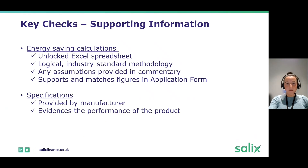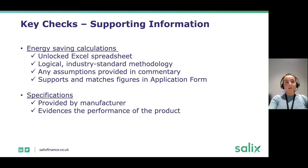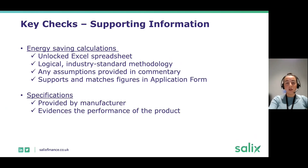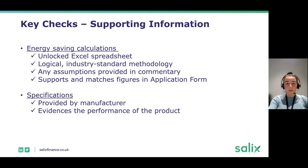Regarding energy saving calculations, ideally these are in an unlocked Excel spreadsheet so we can track the methodology and assumptions used. We expect logical industry-standard methodology with assumptions provided in commentary, and the calculations should support the figures used in the application form as an evidential basis. Specifications should be provided by the manufacturer and evidence the product's performance — for example, if you're providing updated heat pump calculations, we'd expect the SCOP to match what the data sheet specifies.